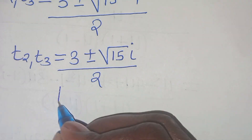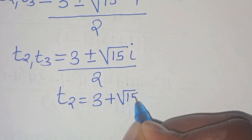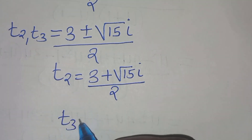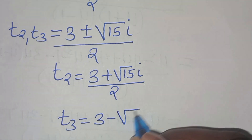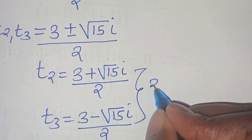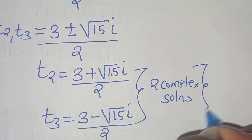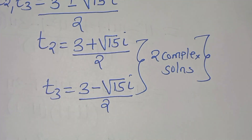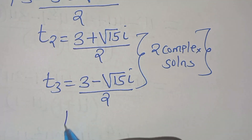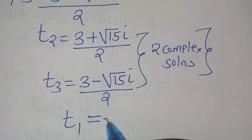Therefore t₂ equals 3 plus root 15 i, divided by 2, and t₃ equals 3 minus root 15 i, divided by 2. These are two complex solutions. In total we have three solutions: two complex and one real solution, t₁ equals minus 2.